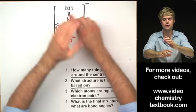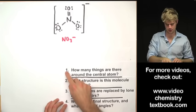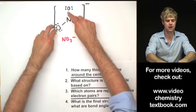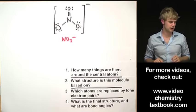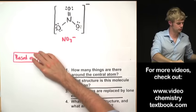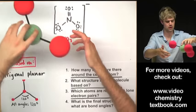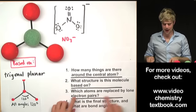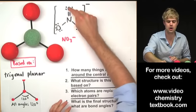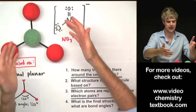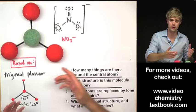Next: NO3⁻. Don't worry about the charge — it doesn't matter for VSEPR. Step one: how many things are around the central atom? There's a double bond here, but it still counts as just one bond. So there are three bonds to other atoms around the central atom. This means it's based on the trigonal planar shape. And since no atoms are replaced by lone electron pairs, the final shape is trigonal planar, with 120 degrees between each of the atoms.